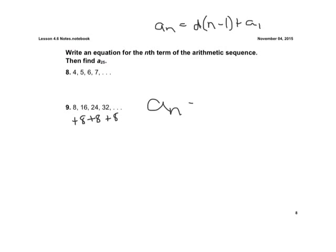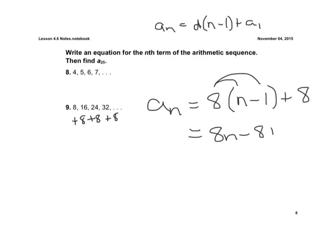So our general equation, a sub n is equal to 8, our common difference. And we don't know what n is. Minus 1 plus our first term, which is 8. Okay. Then we distribute. So we have a sub n is equal to 8n minus 8 plus 8. Minus 8 plus 8, that just equals 0. So what we're left with is a sub n is equal to 8n.